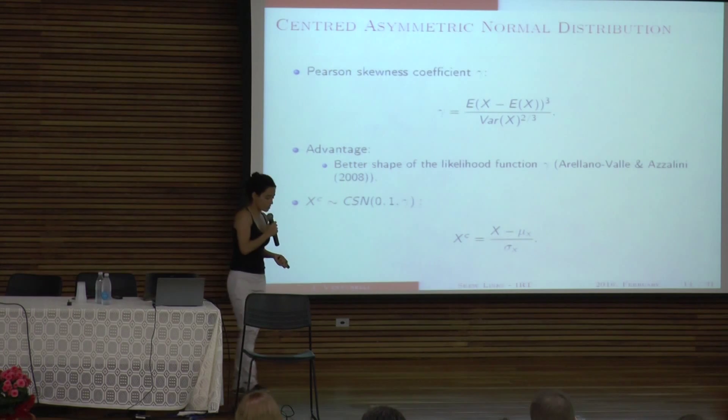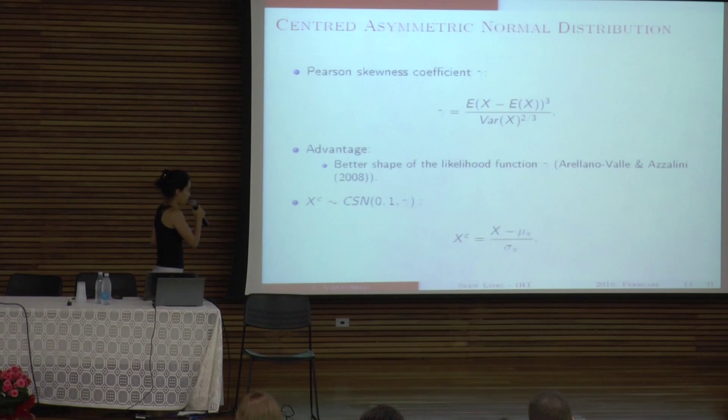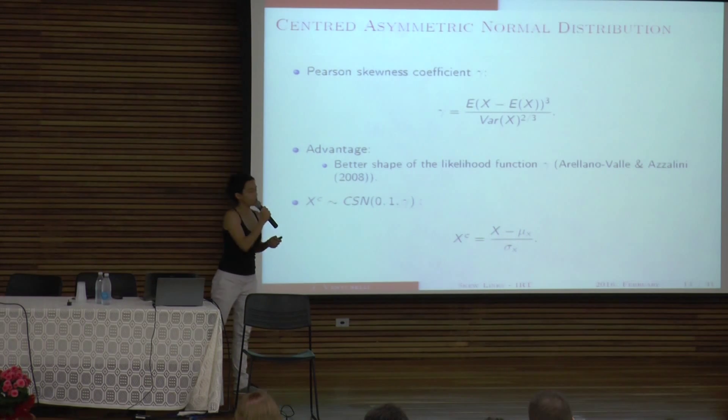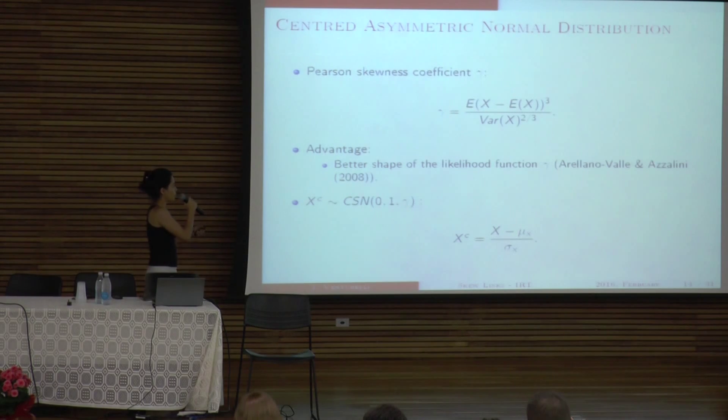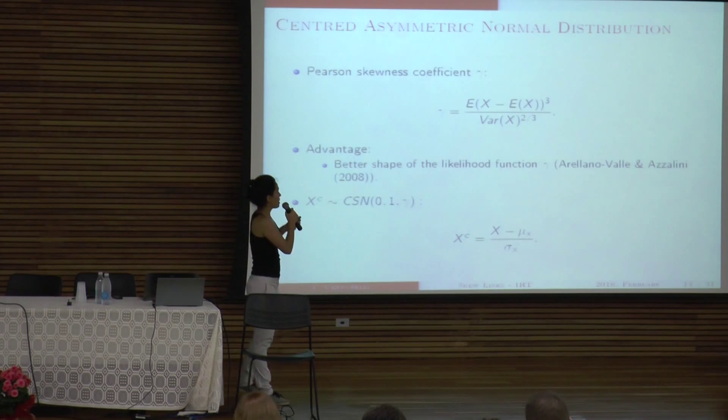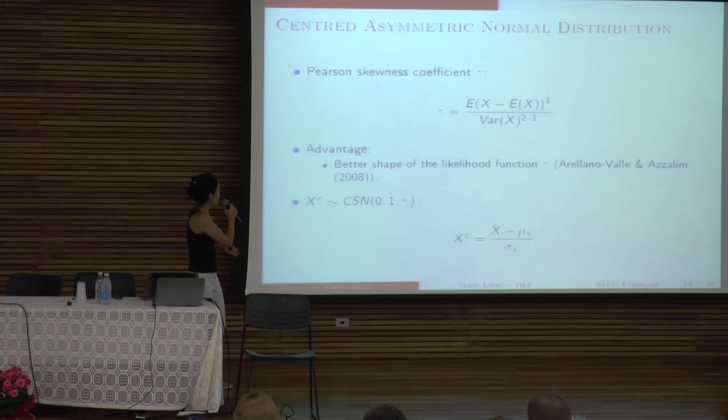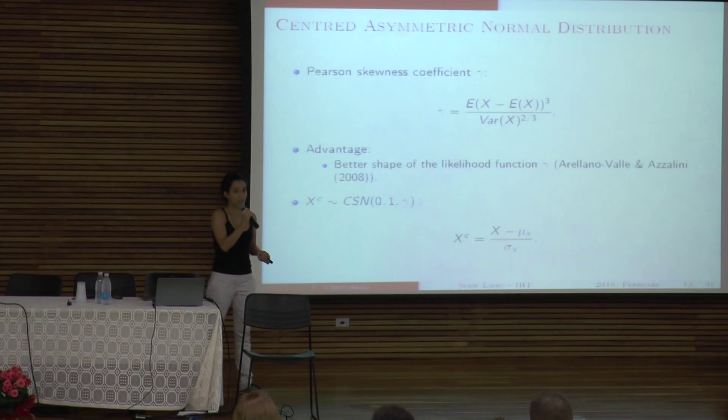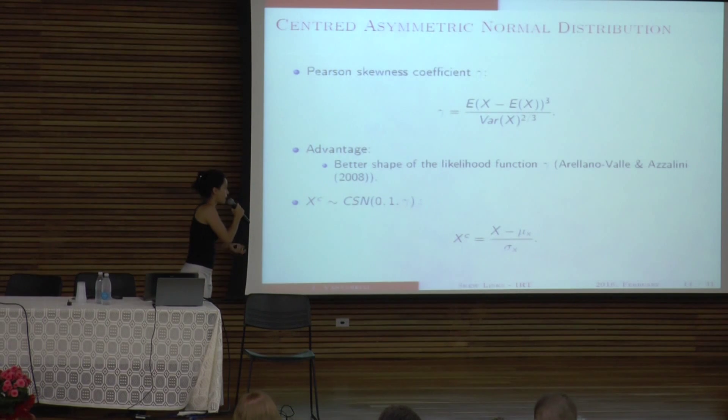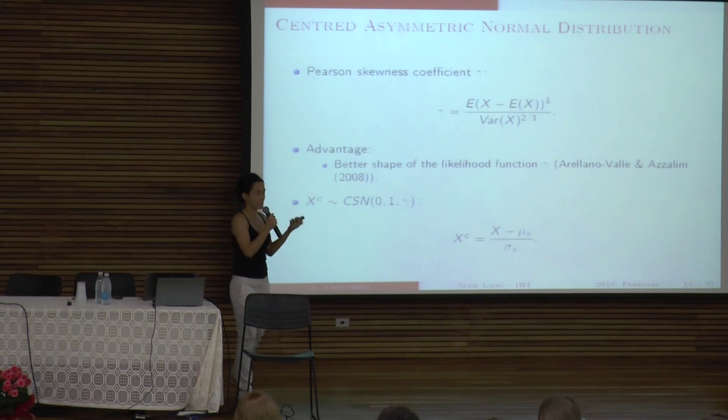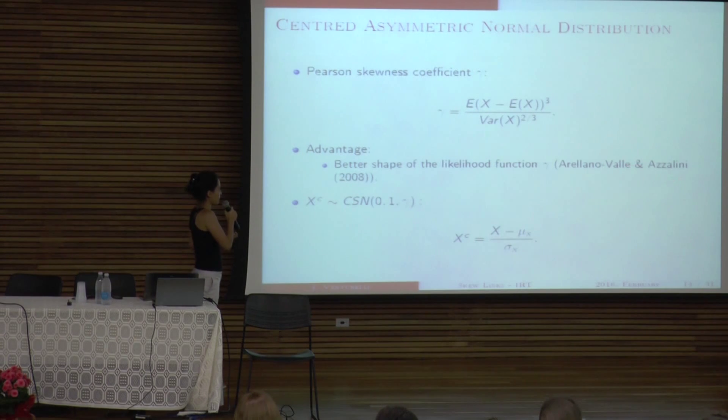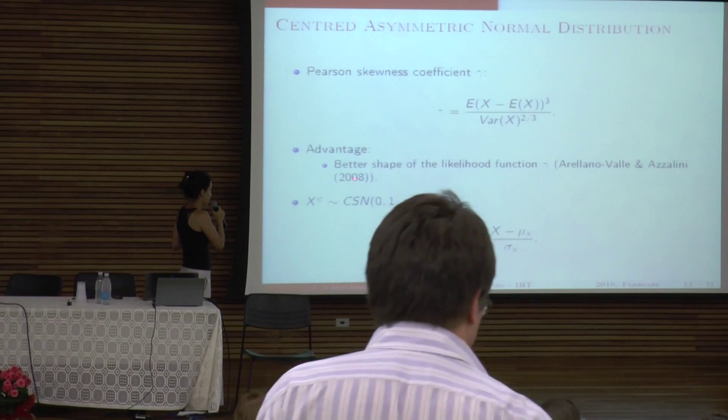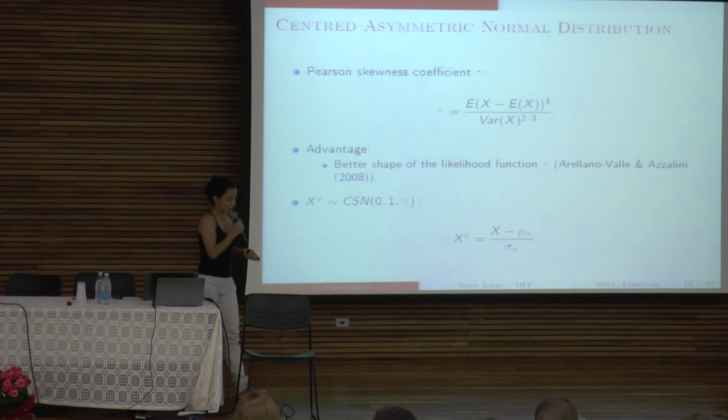But instead of using that parameterization, we use, based on the parameterization of the normal distribution. So instead of using the parameter that Bazan uses, we use the gamma, which is Pearson's skewedness coefficient. We did that based on the work of Professor Caio Azevedo. But what they do in their work is to put this distribution on the ability level. So Azalini, they say that this parameterization would better make the shape of the likelihood better.